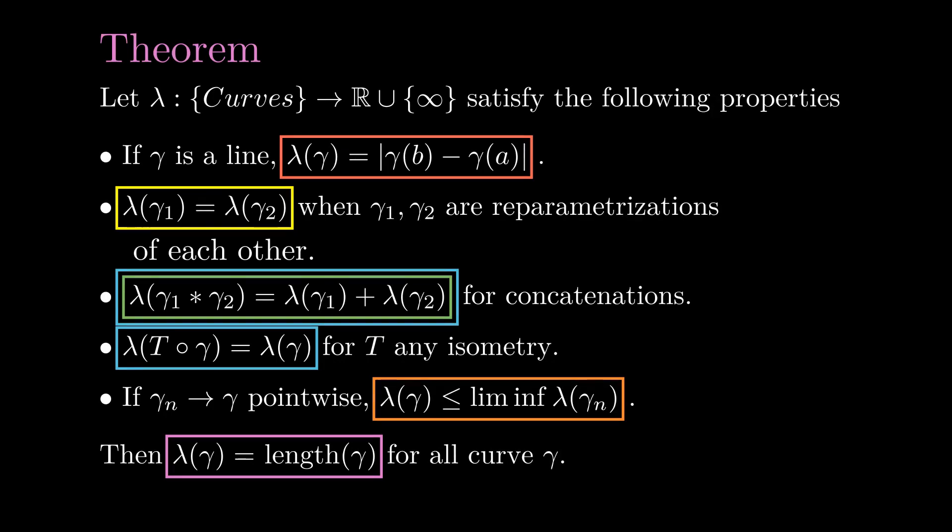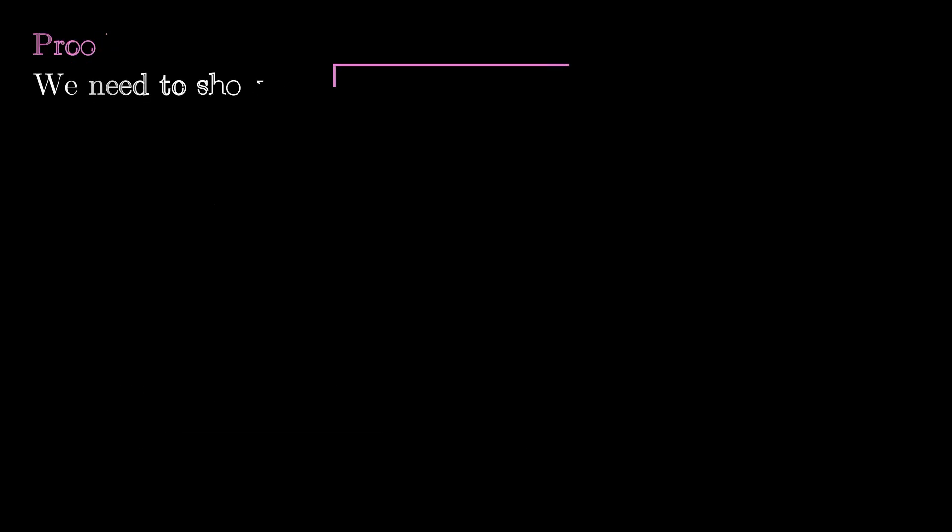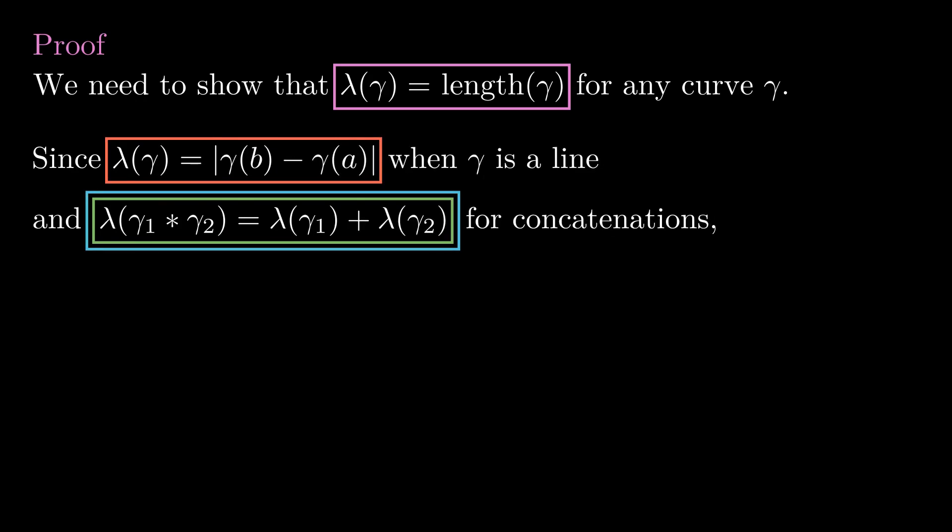If we have some functional λ that assigns a number to each curve and it satisfies these same 5 properties, then it has to be the length. To prove this theorem, all we need to show is that for any curve γ, λ(γ) equals the length of γ. By the first property, this equality holds for lines. By the concatenation property, since it holds for lines, equality also holds for broken lines.